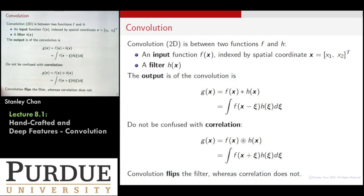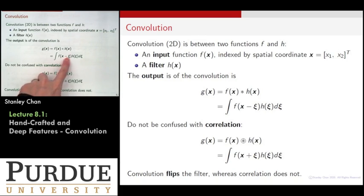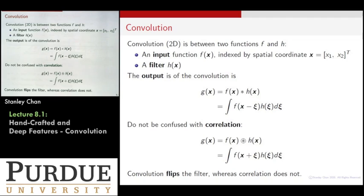I want to clarify that convolution is not the same as correlation. In convolution you have this negative psi, but for correlation it's a plus psi — so these are two different things. Convolution requires you to first flip the signal over, then shift it left and right. So there's a flip, a shift, and an add procedure — a three-step procedure. Correlation skips the flipping procedure.